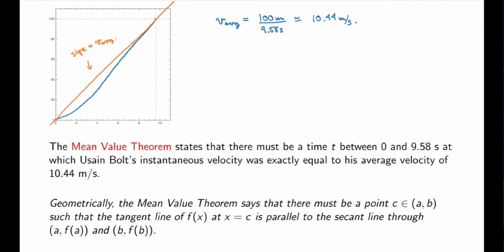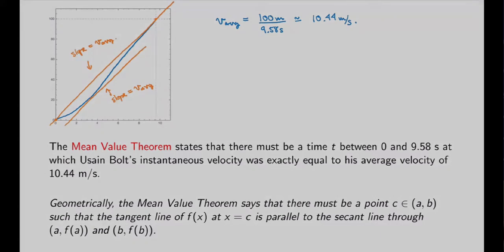Looking at the graph of the position function, I can guess that probably somewhere around here the tangent line will be parallel to the secant line. So the slope of the tangent line at this point will also be equal to the average velocity — in other words, the instantaneous velocity at this point equals the average velocity, which is the statement of the mean value theorem.